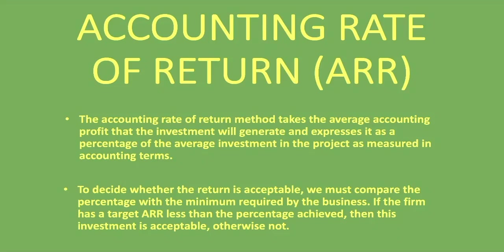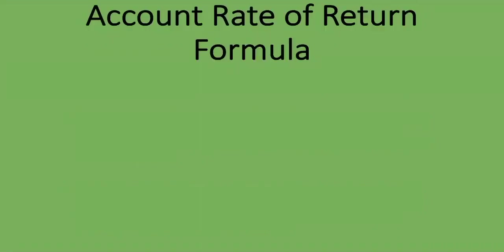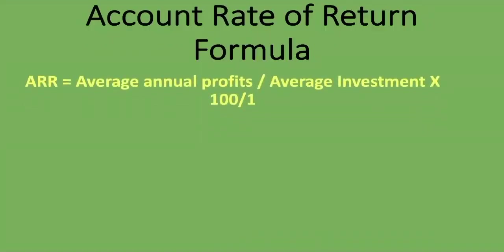So with the ARR, once we've calculated it and got our percentage, we need to compare it with what the company has set as their requirement. If our calculated ARR is higher than what the company requires, we accept the project; if it's lower than what the investors require, we reject the project. The formula for the accounting rate of return is: average annual profits divided by average investment, multiplied by 100.